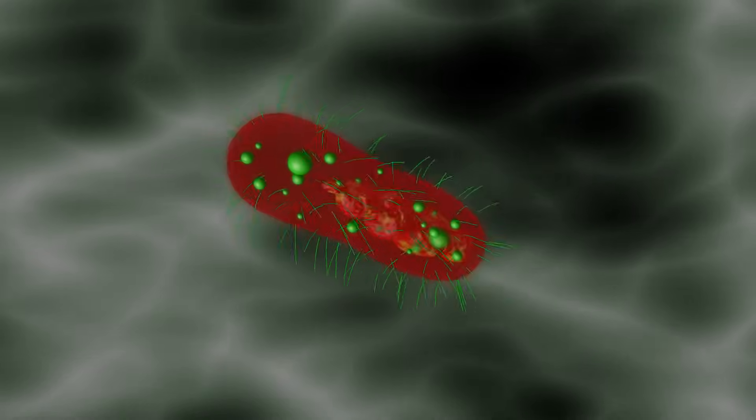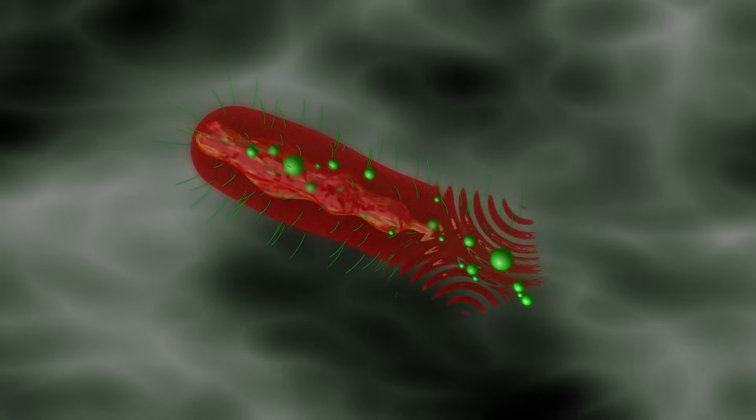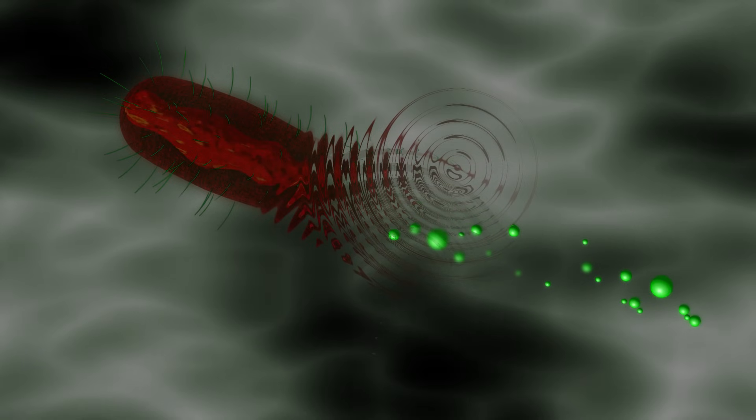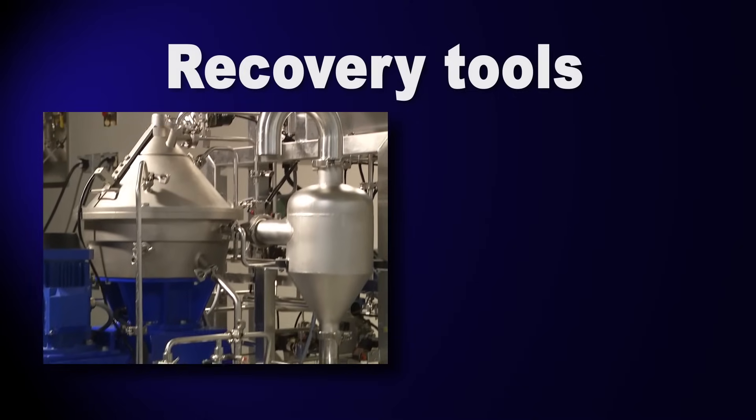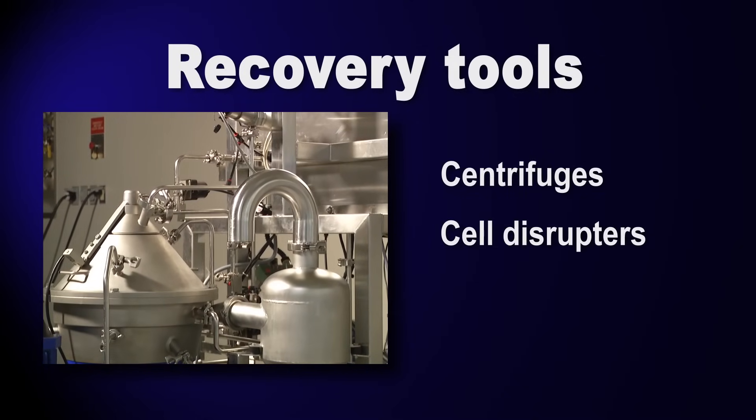Exactly where within the production flow those technologies are employed varies significantly from product to product. Recovery processes commonly use a variety of tools such as centrifuges, cell disruptors, and microfiltration to isolate the product.